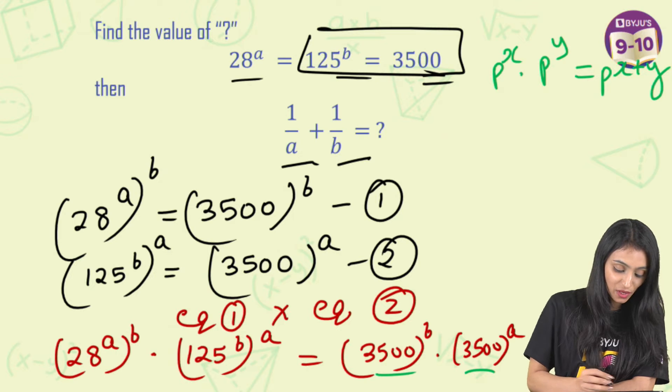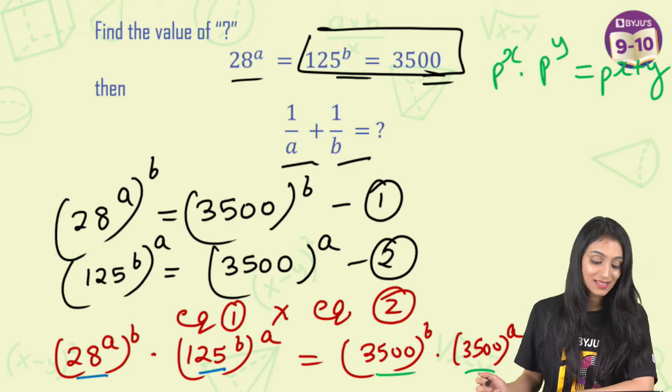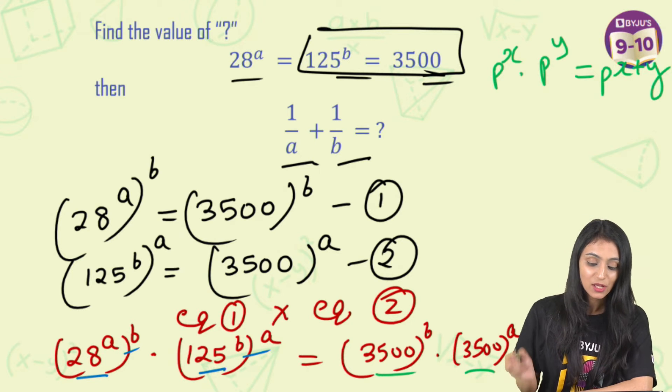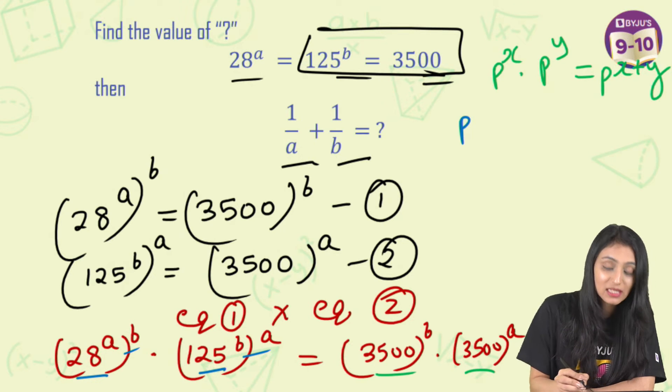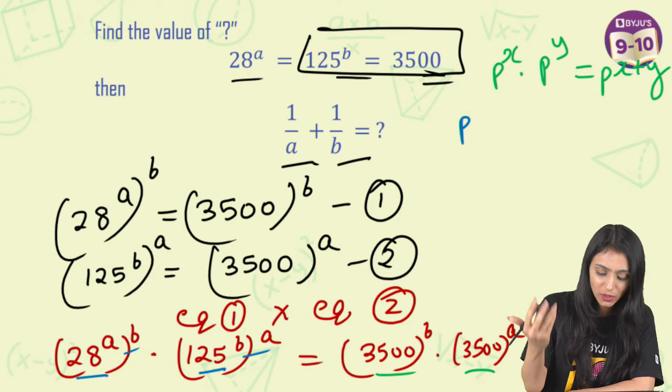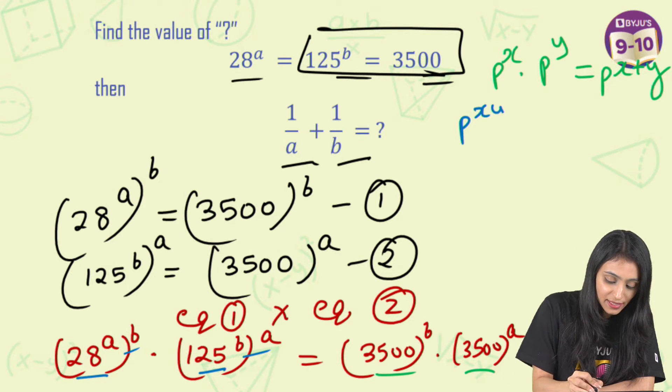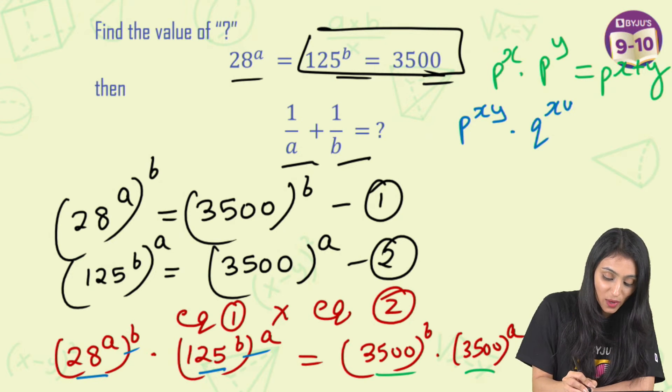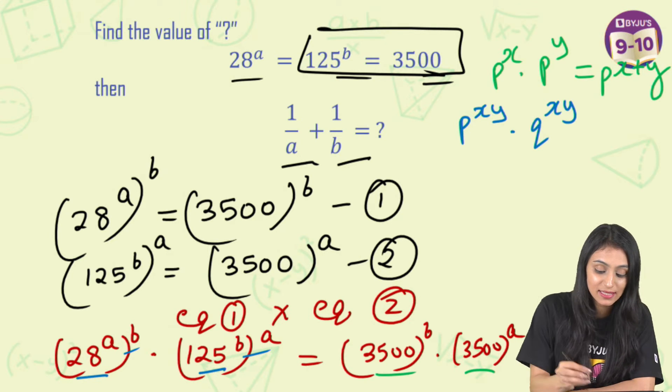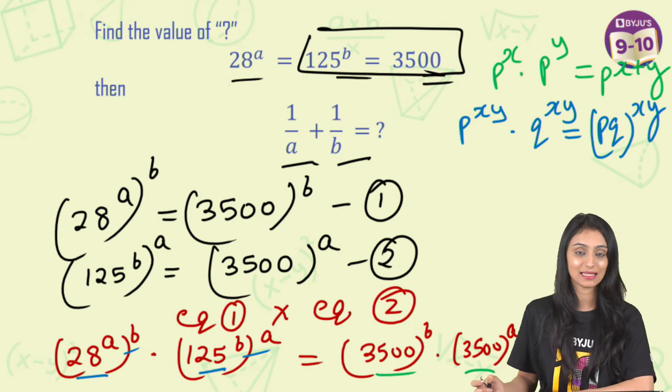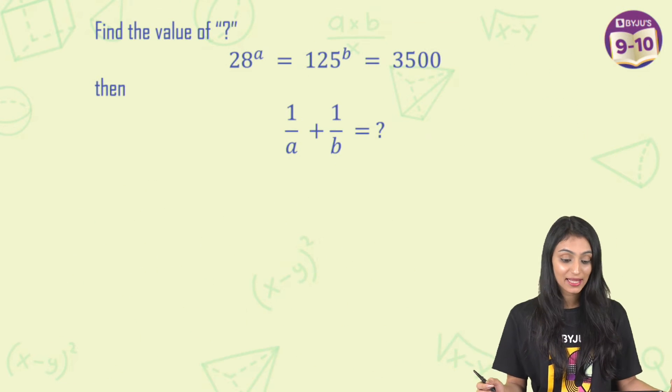And on the left side if you observe, here bases are different but powers are same. This is AB, this is also AB. So bases are different. Let's suppose it is P to the power XY dot Q to the power XY. What do we do in such cases when powers are same and bases are different? We simply multiply the bases and keep the power as it is. And the same thing I'm going to do here as well.